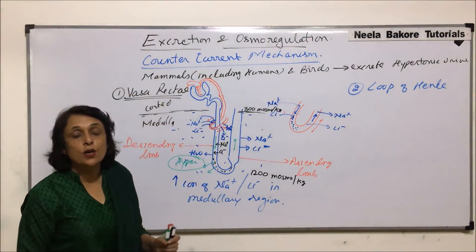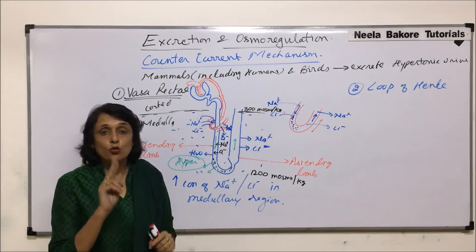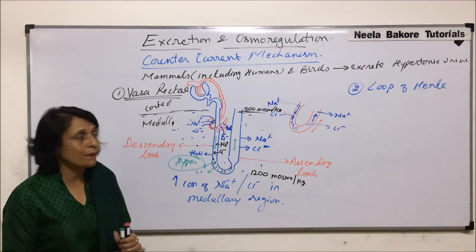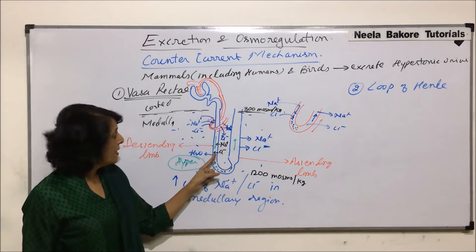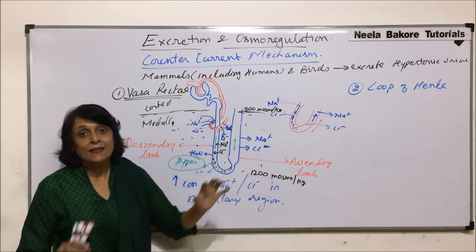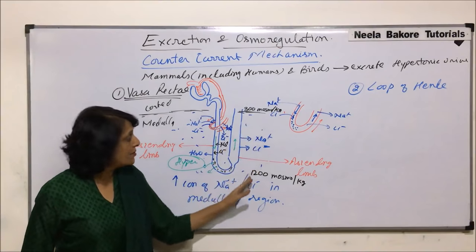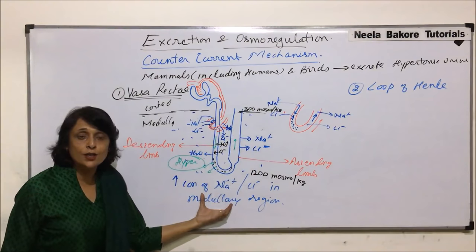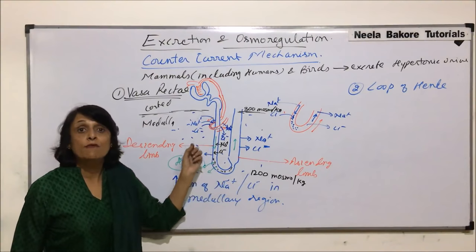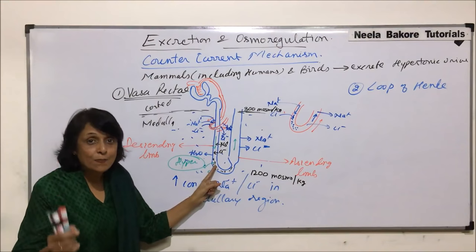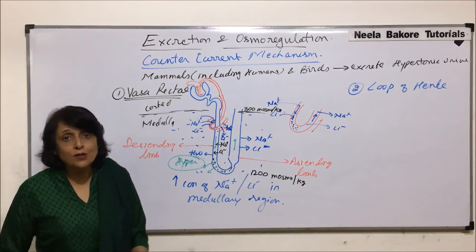Counter-current mechanism works so that organisms are able to excrete very concentrated hypertonic urine. There are two places where this cyclic movement of ions takes place: vasa recta and loop of Henle. In both, one arm takes the ions and the other arm releases them, so all the ions remain in the interstitial fluid of the medullary region. This results in a concentration gradient — deeper in the medullary region there is more concentration — and water moves from the hypotonic filtrate to the hypertonic interstitial fluid, making urine more concentrated.